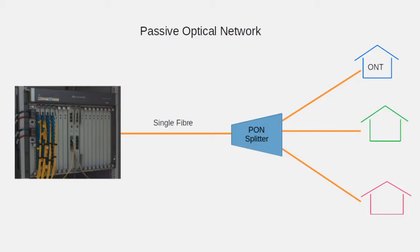The three main components in a passive optical network are the optical line terminal, OLT; an optical splitter, which broadcasts the light to all the optical network terminals, ONTs.